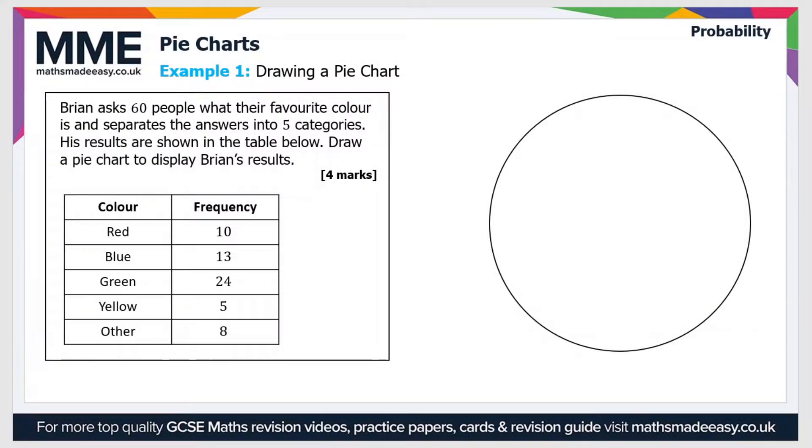Welcome to the Maths Made Easy tutorial on pie charts. In this video we're just going to have a look at a couple of example questions. So the first one: Brian asks 60 people what their favorite color is and separates the answers into five categories. His results are shown in the table below. Draw a pie chart to display Brian's results.